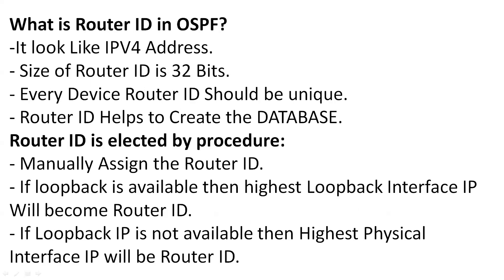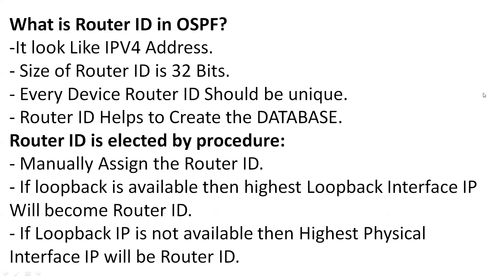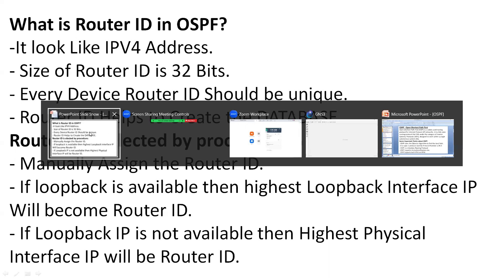The selection of router roles is done on the basis of the Router ID. Router ID is basically the name of a router. The database is created based on it. It looks like an IPv4 address; the size of Router ID is 32 bits, and every device has a unique Router ID.